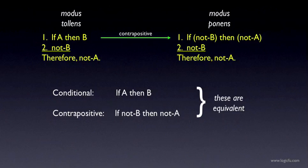So if you're ever confused about how to write modus tollens, just remember that if you rewrite it in terms of the contrapositive, then you should recover an argument that has the form of modus ponens.